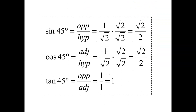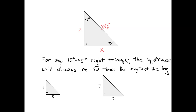In summary, here are the trig functions for 45 degrees: sine is radical 2 over 2, cosine is radical 2 over 2, and tangent is 1. We will use those values a lot as we look at trig problems moving forward. For any 45-45 right triangle, the hypotenuse will always be radical 2 times one of the legs. For example, if the two legs are 3, the hypotenuse is 3 radical 2; if the two legs are 7, the hypotenuse is 7 radical 2. That relationship will always hold for a 45-45 degree right triangle.